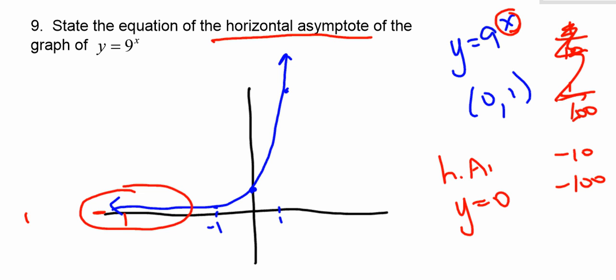And again, for any graph, any equation of the form y equals base to the x, where base is a real number, you're going to get the same answer. The horizontal asymptote is always going to be at 0, at y equals 0.